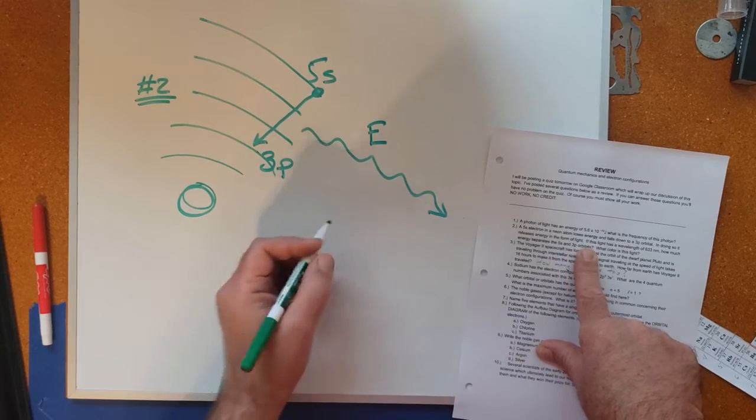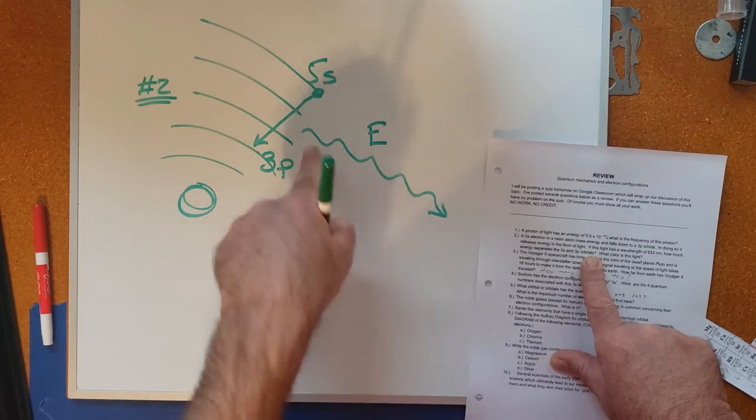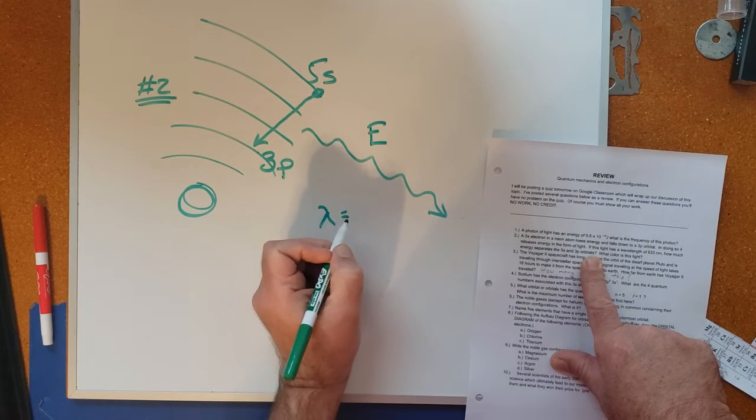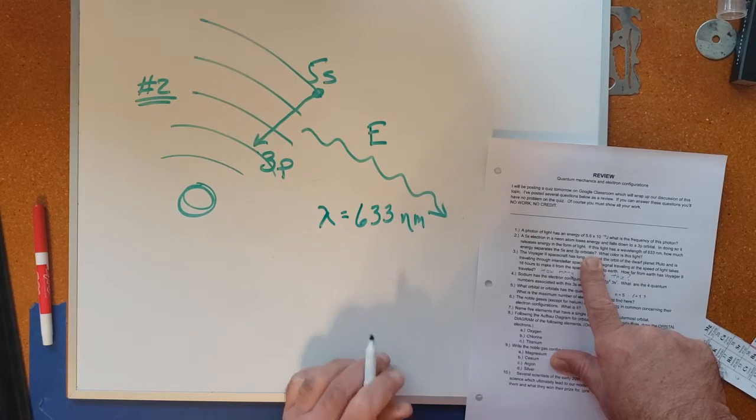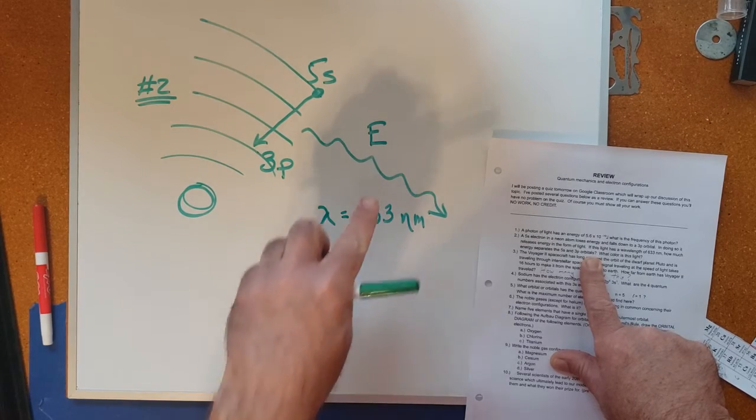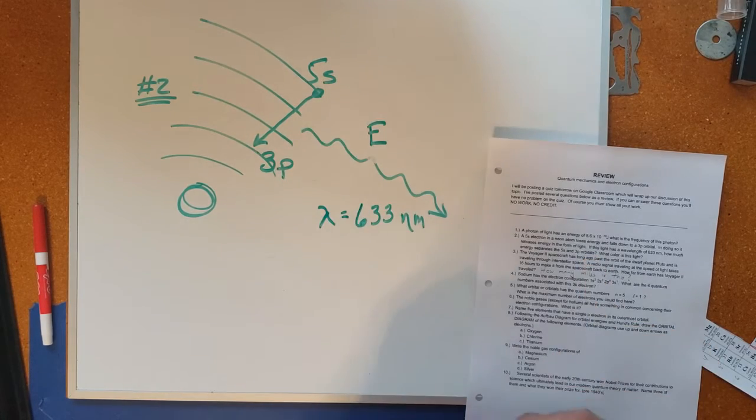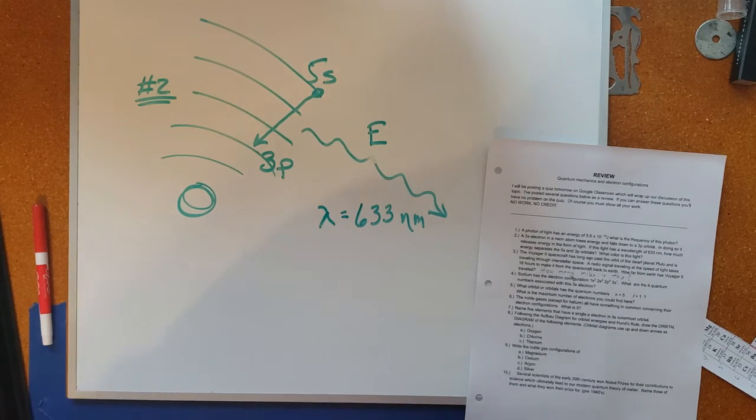So going under that assumption, we're told that this light wave has a wavelength of 633 nanometers. How much energy does that correspond to?